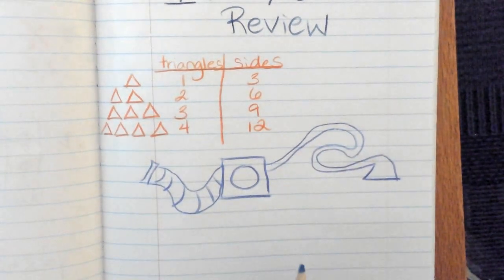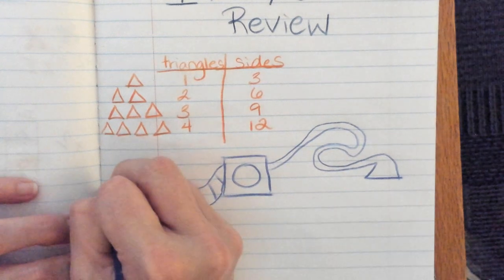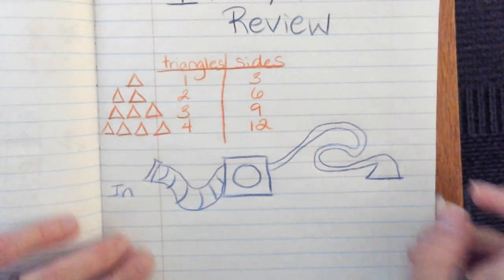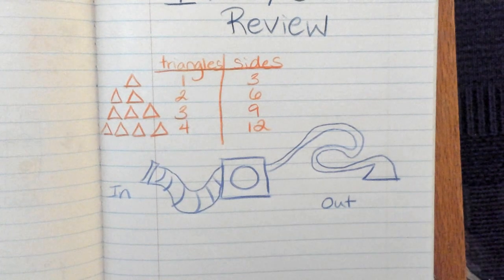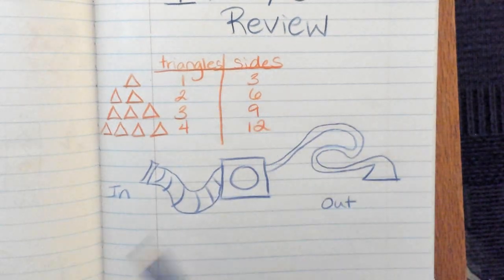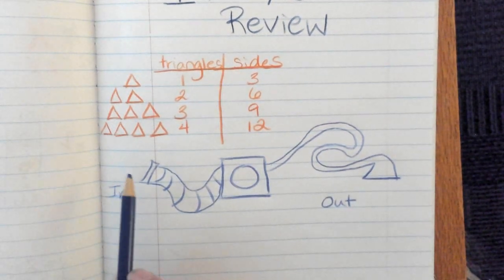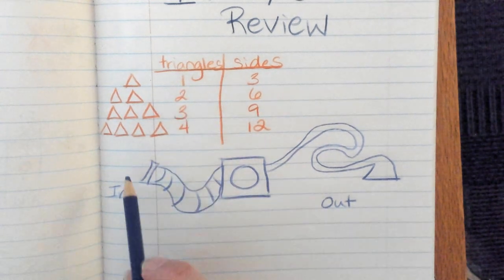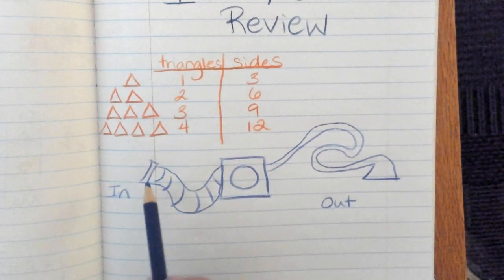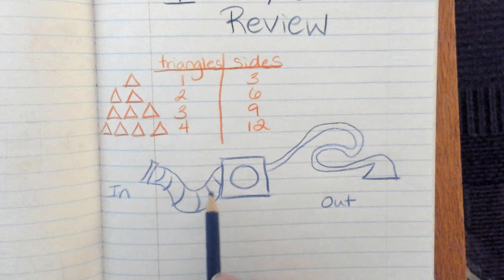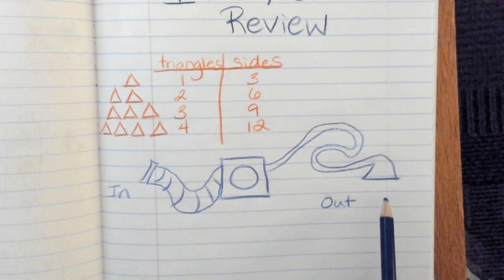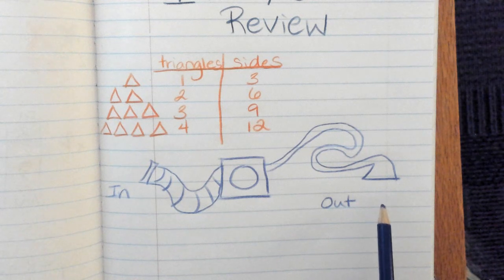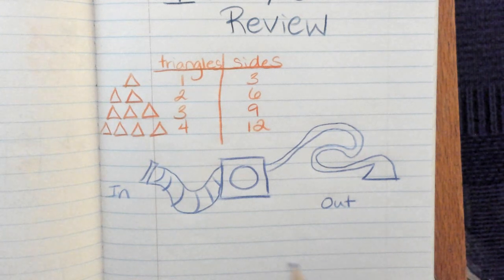So the idea with an input-output machine is you put something in and you get something out. So with the case of my triangles and sides if I put in the number of triangles, so one triangle. If I put a one in, then it goes through the machine and it comes out and it tells you three sides. And yes, it has to make that sound effect.